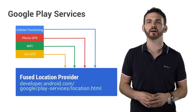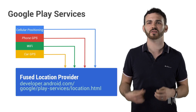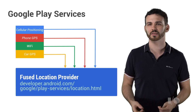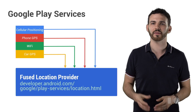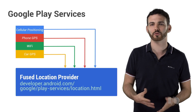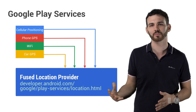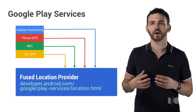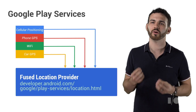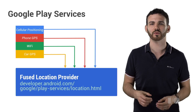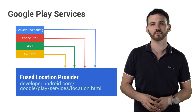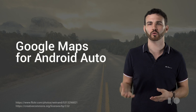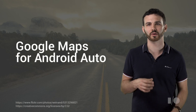The Fused Location Provider combines the different location technologies available on an Android smartphone — cellular signal, Wi-Fi, and GPS — into a single high-level API that allows developers to specify accuracy requirements and update frequencies, instead of dealing with individual location sources. By adding location sources from the car, we're enhancing the accuracy of location data using APIs that apps are already using. Now I'm going to talk about how we've used Android Auto in the Google Maps app to enhance the in-car experience.